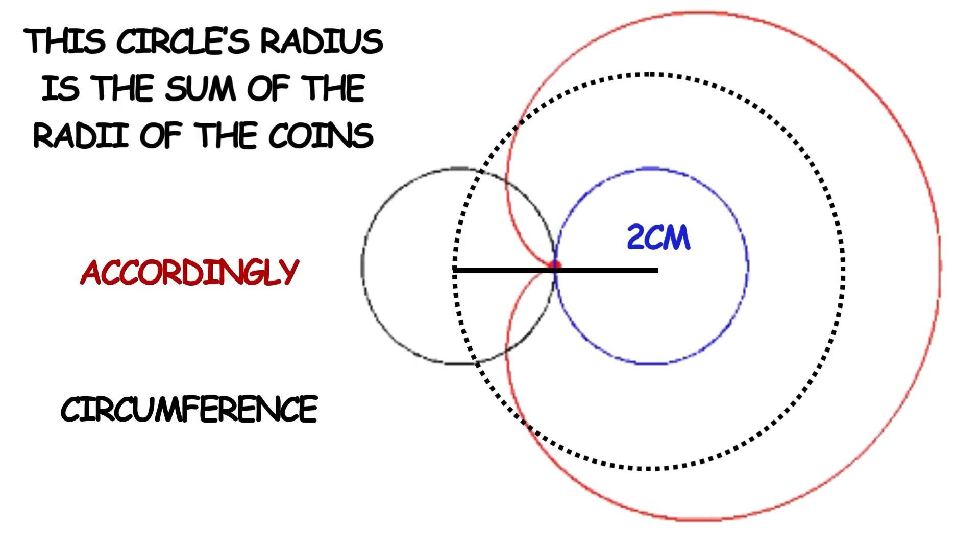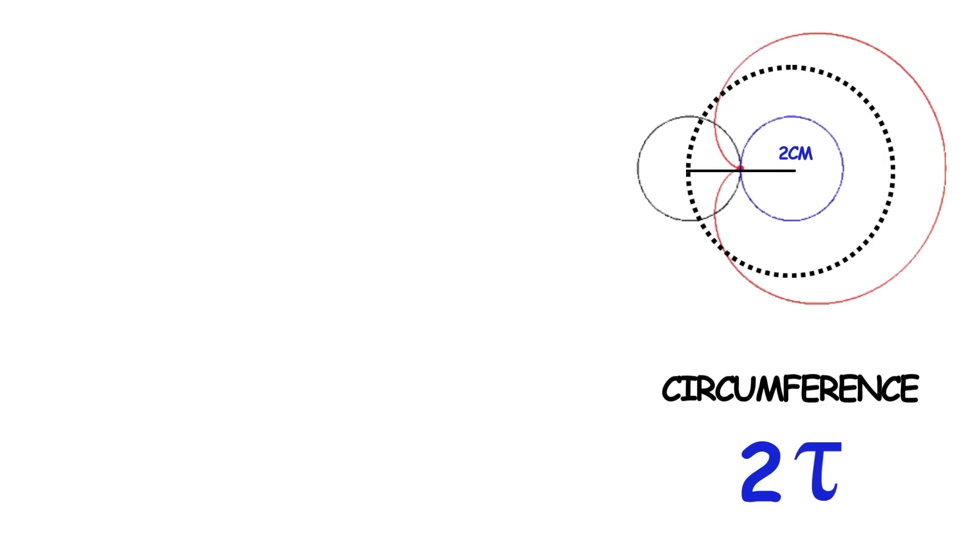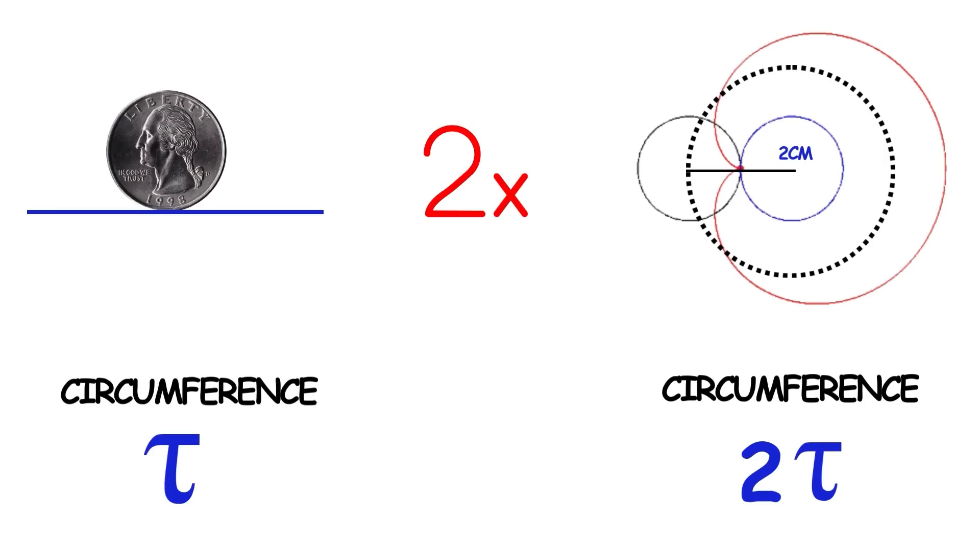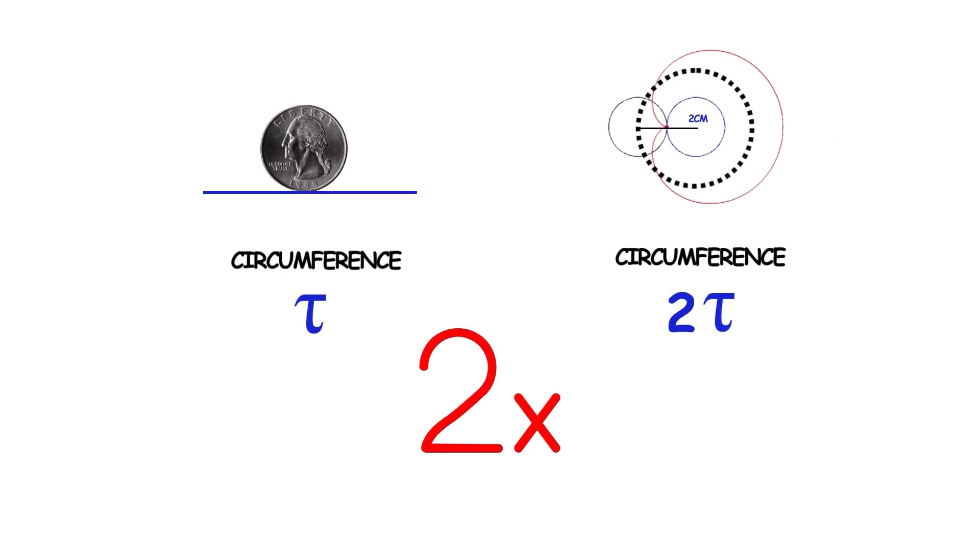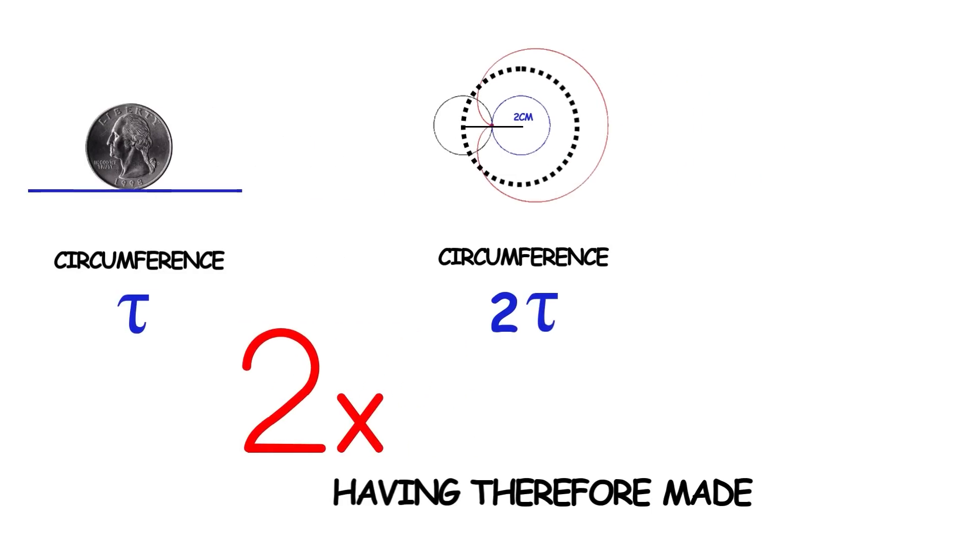Accordingly, its circumference is 2 tau centimeters. In other words, coin B travels twice as far in this example as it did in the previous example, still while only rolling without slipping. Thus, coin B must have rotated twice as much, having therefore made 2 turns.